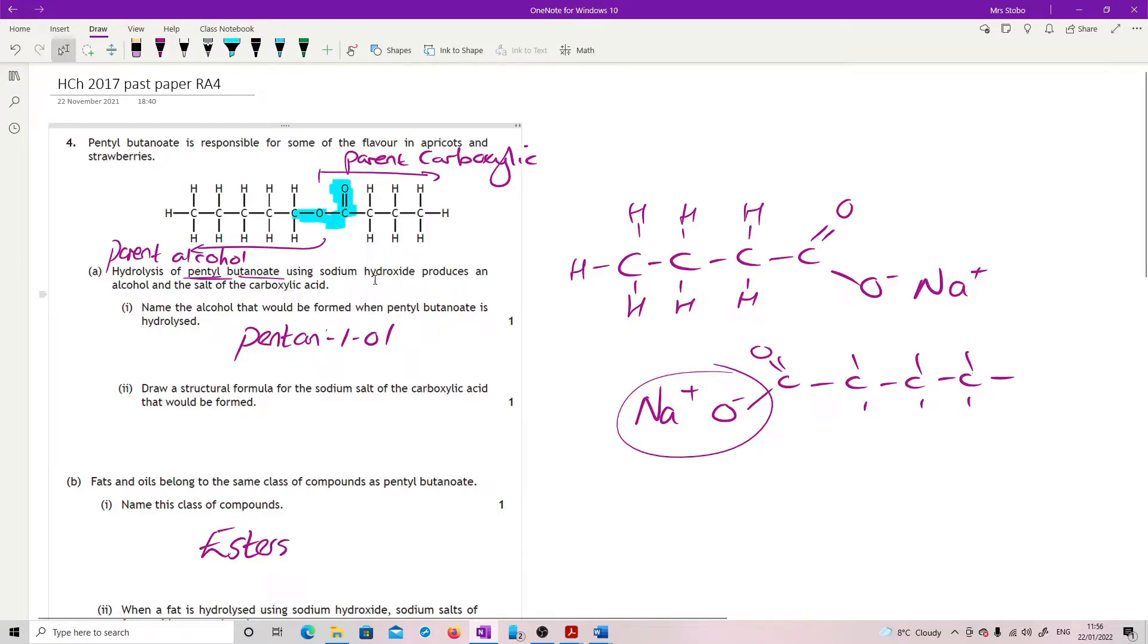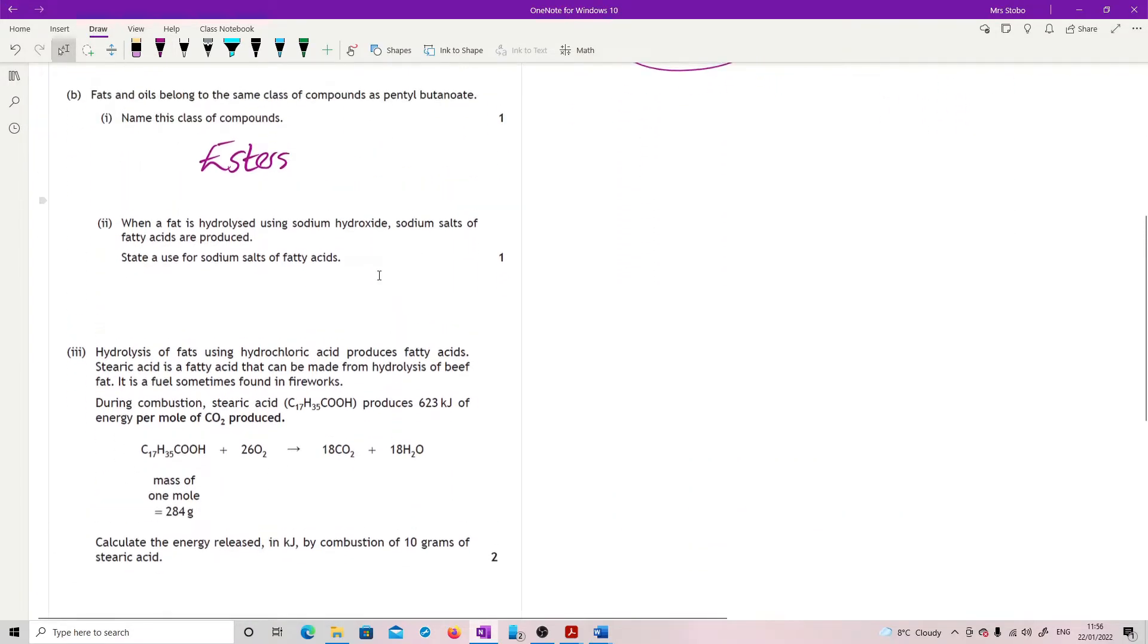When a fat is hydrolyzed using sodium hydroxide, sodium salts of the fatty acid are produced. State a use for sodium salts of fatty acids. These are one of your fancy hybrid molecules, which we generally use for soap. Hydrolysis of fats using hydrochloric acid produces fatty acids. Stearic acid is a fatty acid that can be made from hydrolysis of beef fat. It is a fuel, sometimes found in fireworks.